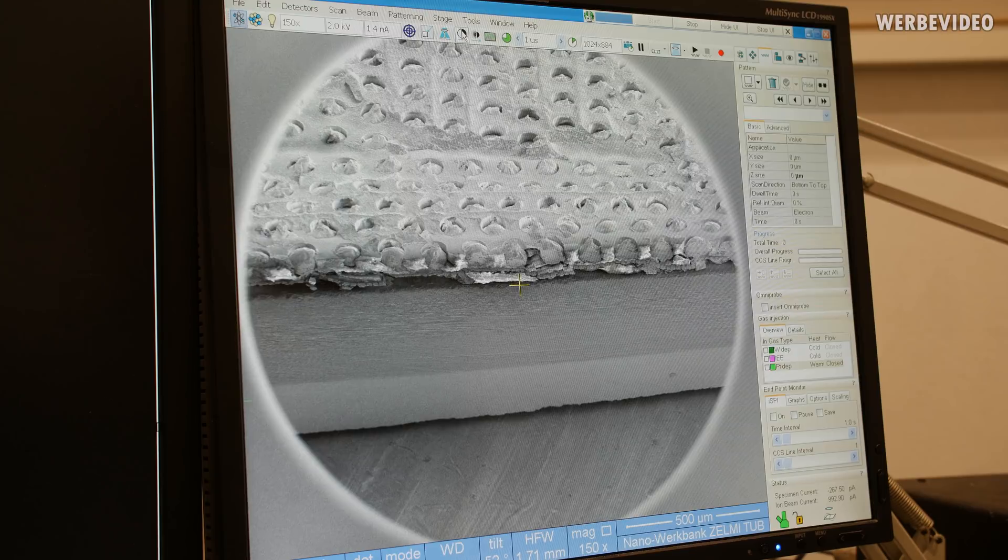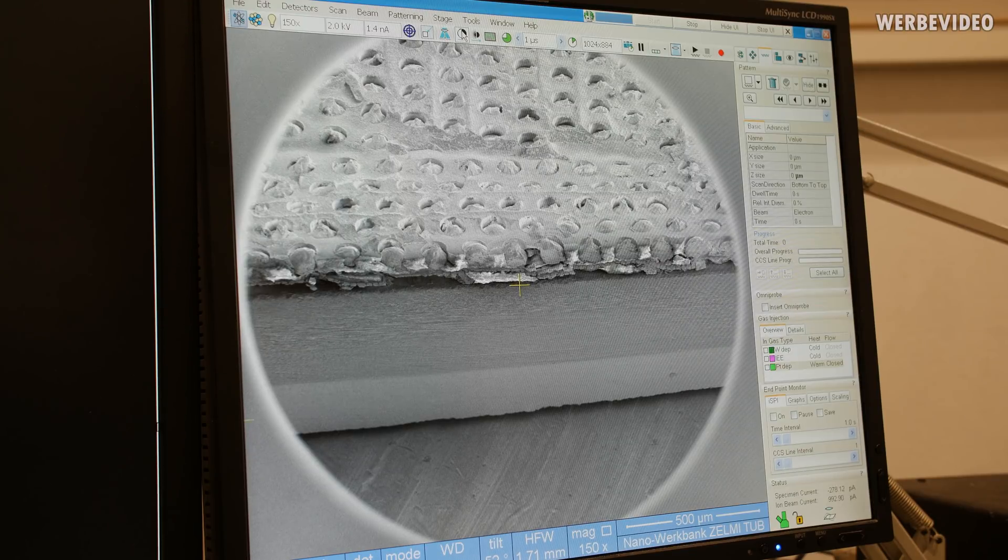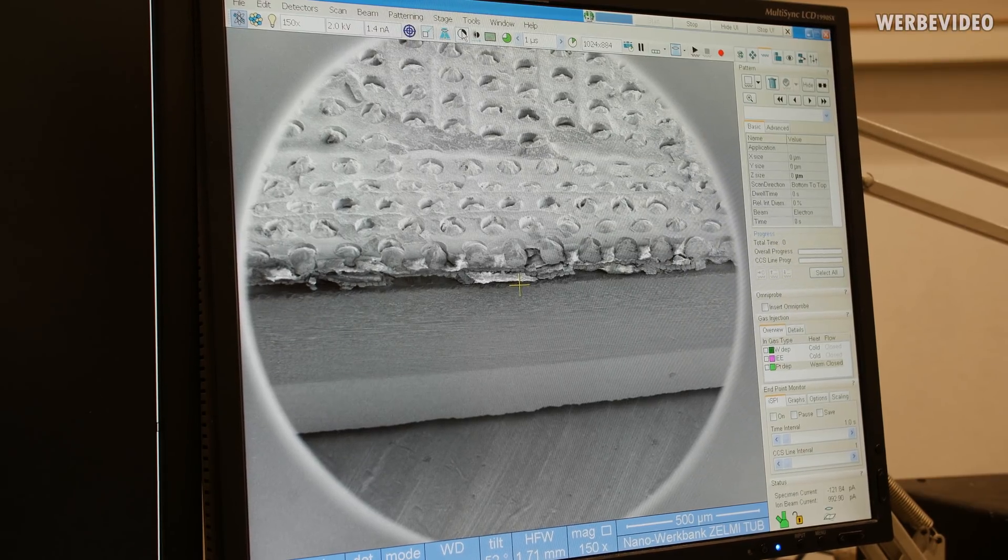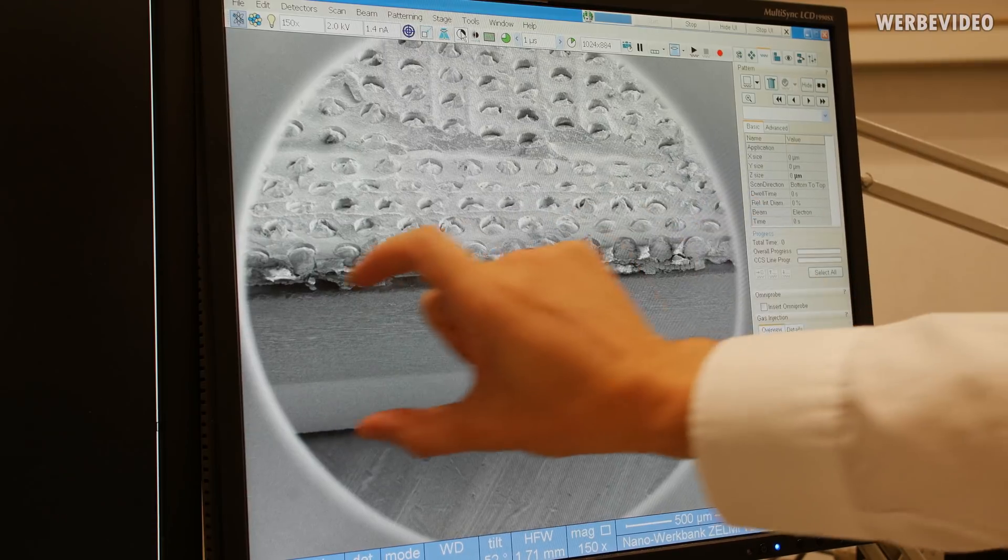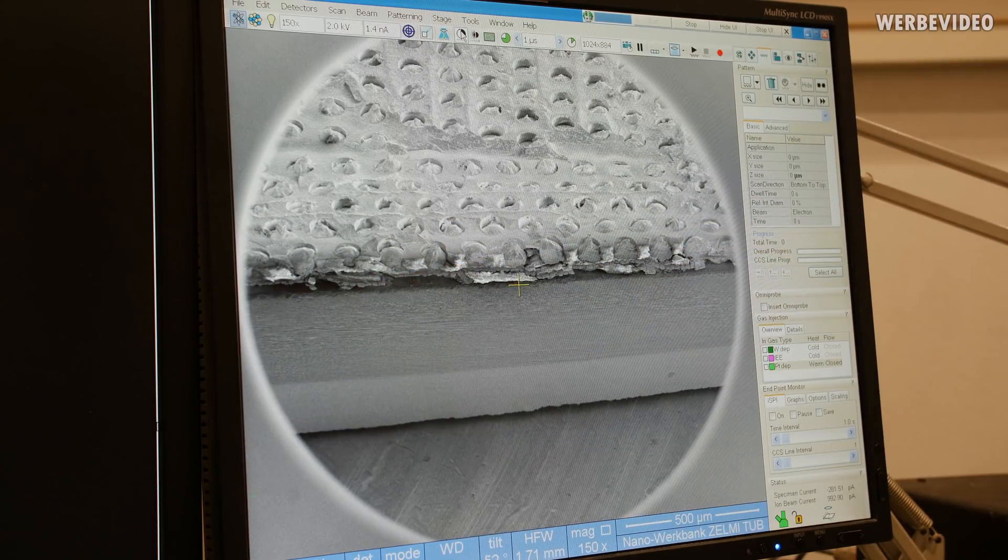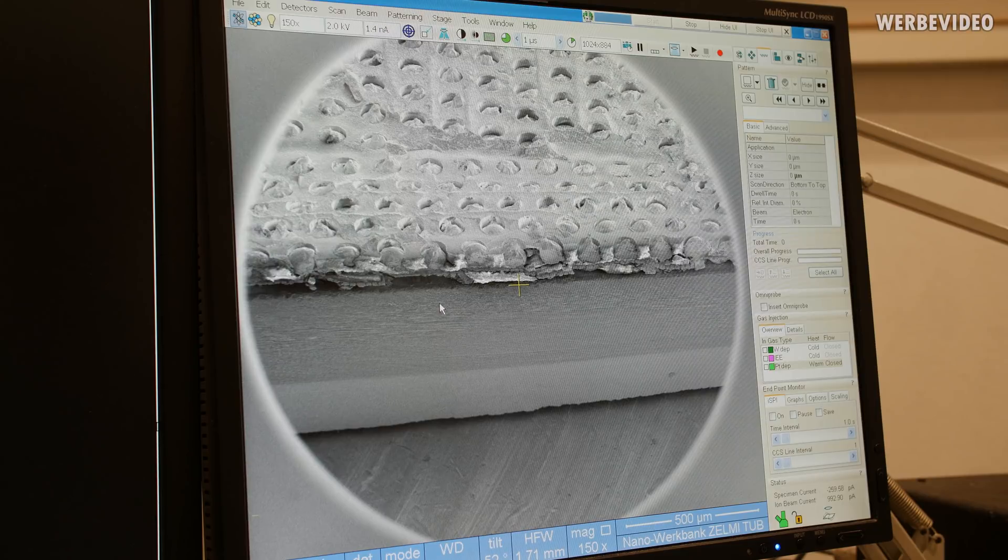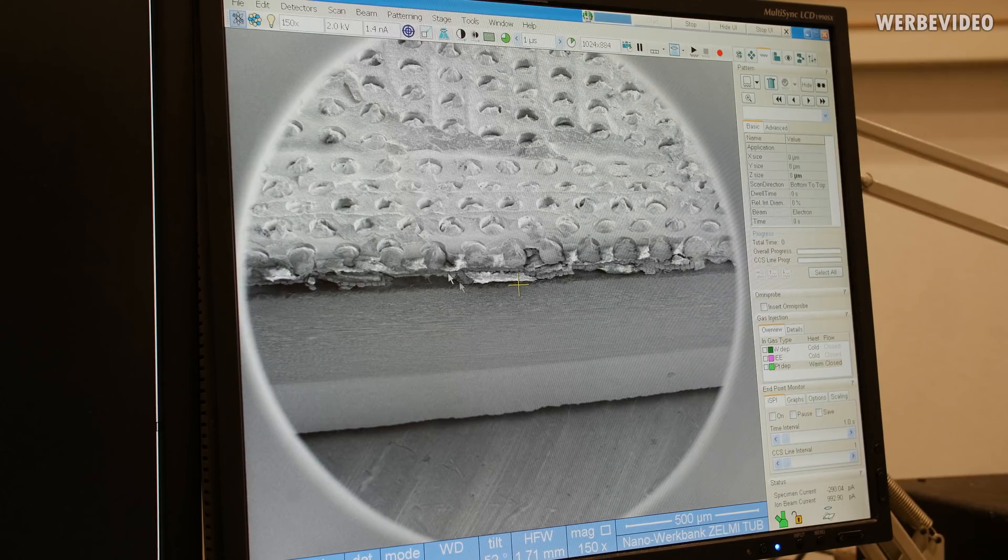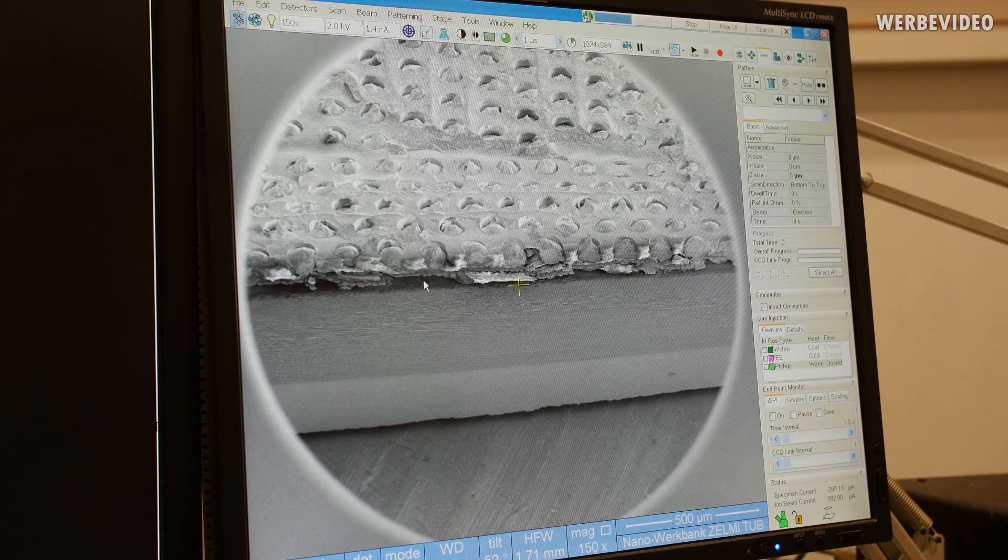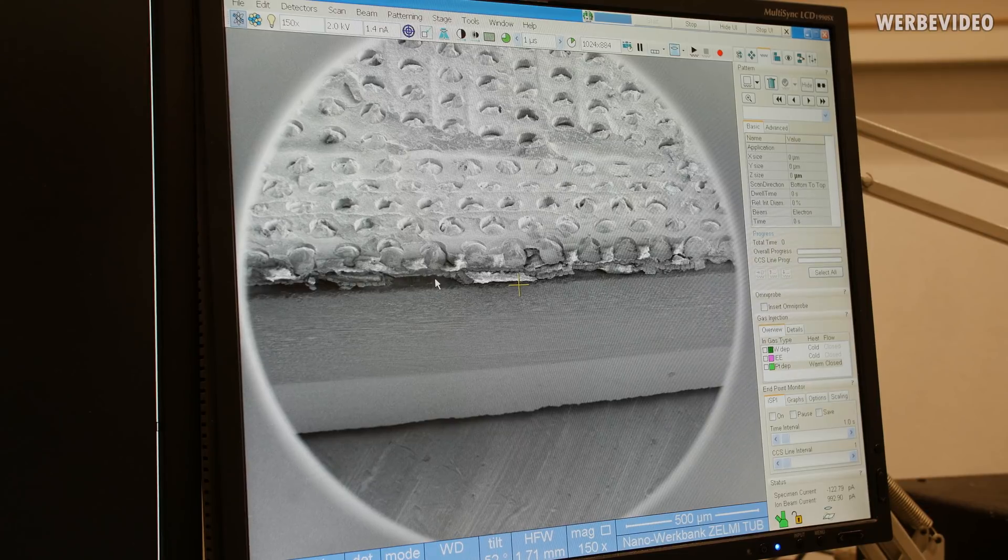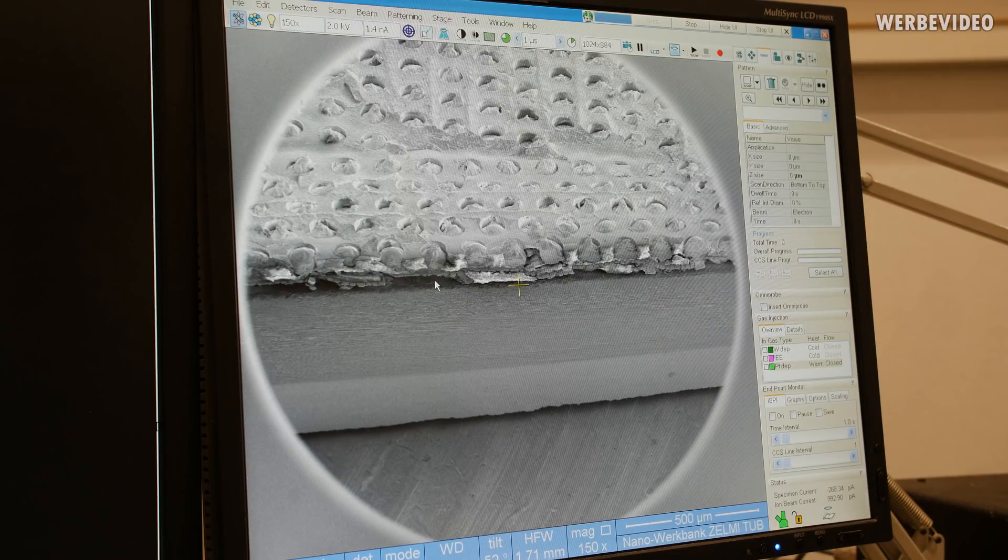Now the specimen is inside of the SEM and you can still see the surface with the solder bumps. Below here this is a silicon wafer and on top of the silicon wafer we have these semiconductor structures that we want to investigate later in the TEM.